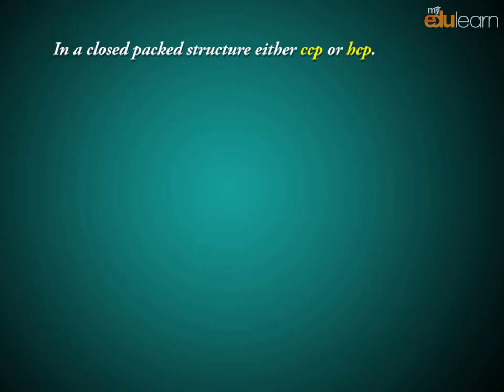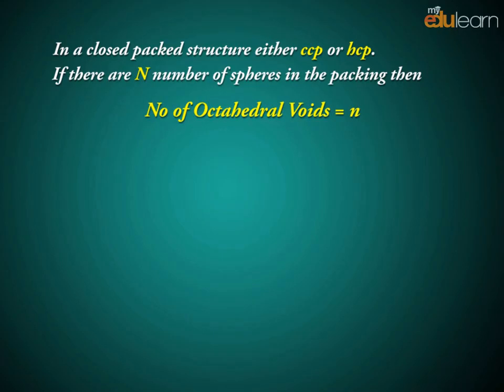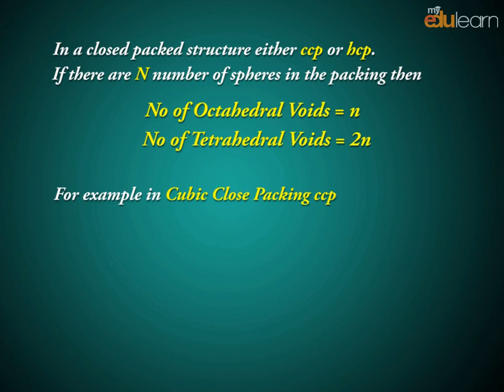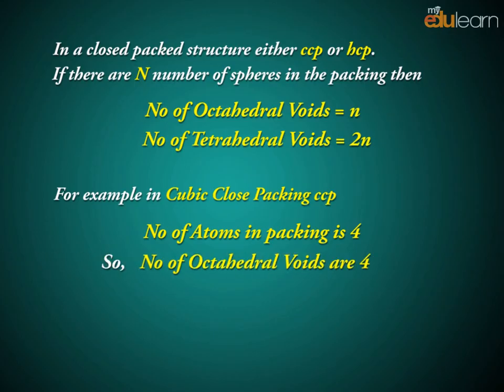In a closed-packed structure, either CCP or HCP, if there are N number of spheres in the packing, then number of octahedral voids equals n, number of tetrahedral voids equals 2n. For example, in cubic closed-packing CCP, number of atoms in packing is 4, so number of octahedral voids are 4, number of tetrahedral voids are 8.